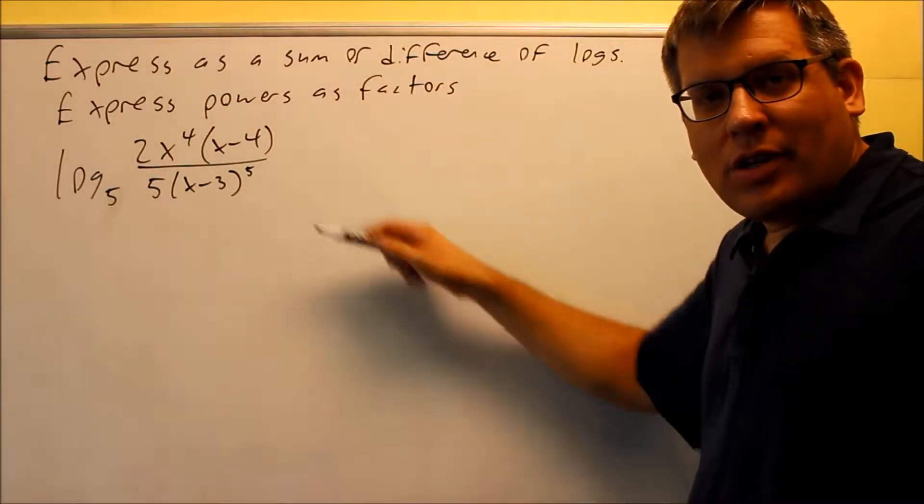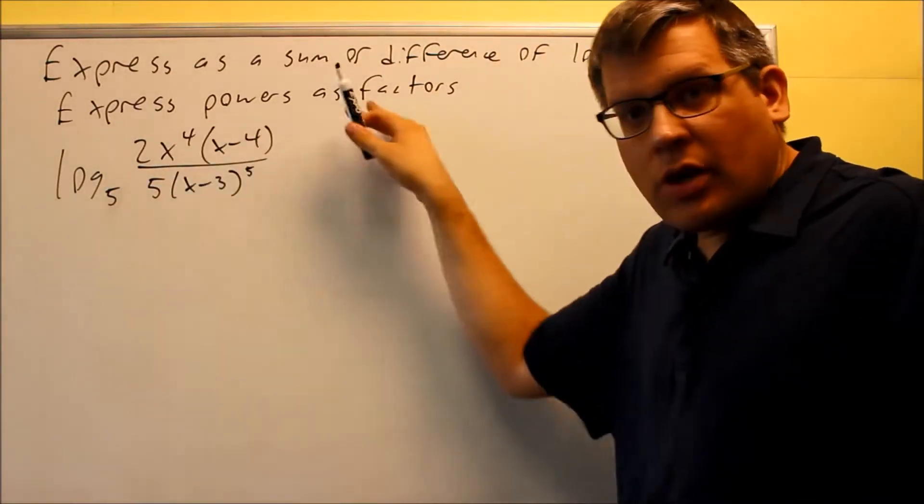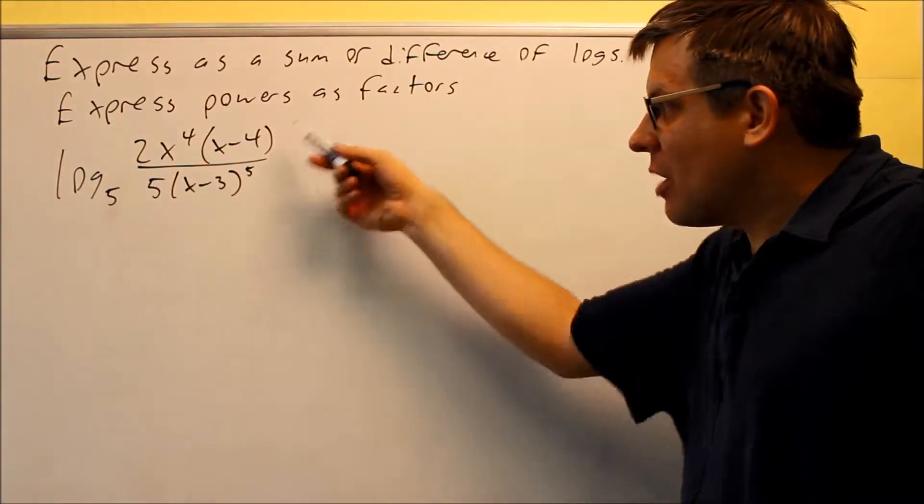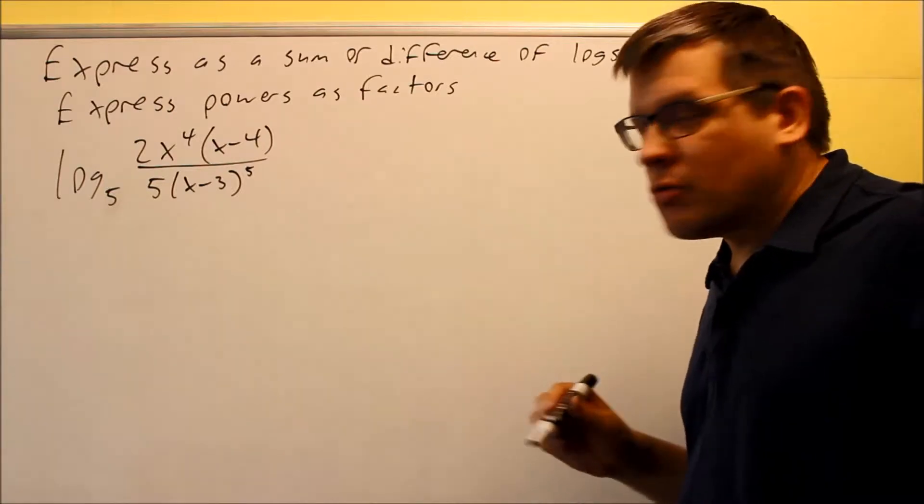Okay, we have another division problem, and we have one where we have multiple things on top and multiple things in the bottom. The first thing we want to do is use rule number seven to separate the division, turn it into subtraction.